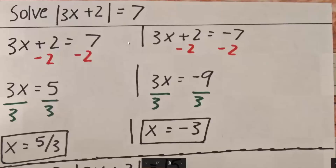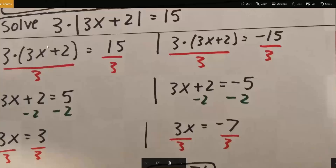And that's all we need to do for this first problem. Next, we'll solve the second problem: 3 times the absolute value of 3x plus 2 is equal to 15. So we'll do almost the same thing — 3 times the inside term is equal to positive 15, and since we're dealing with absolute value, 3 times 3x plus 2 is equal to negative 15.